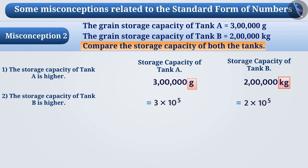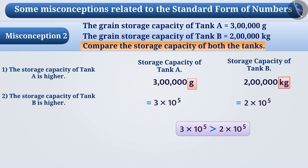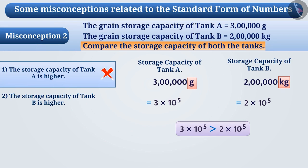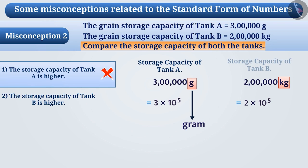Their focus is only on the numbers — since 3 × 10⁵ is greater than 2 × 10⁵, they think the storage capacity of tank A is higher than that of tank B. That's how they choose option 1, which is incorrect. We must focus on the units: tank A is in grams and tank B is in kg.